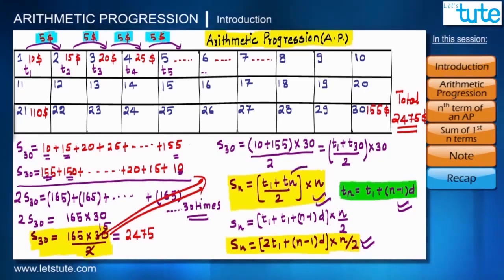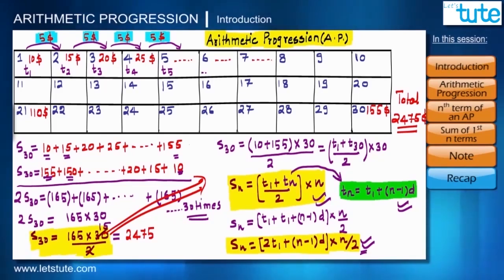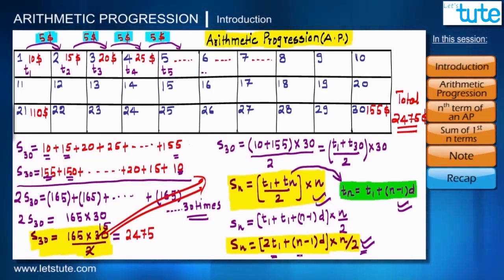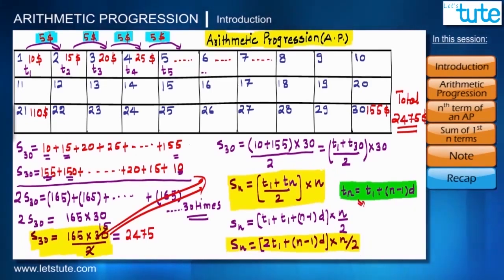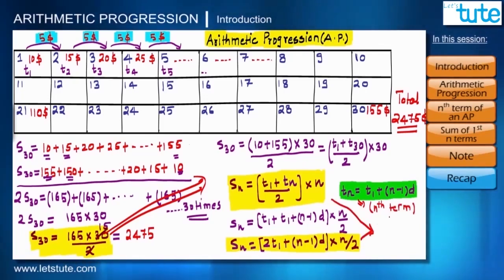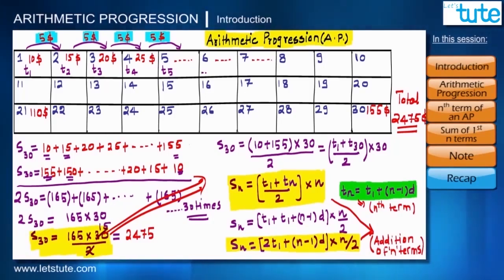If you use the first summation formula, you first need to find the value of tn, then proceed. In the second formula, you can directly use t1, n, and d. Use tn = t1 + (n−1)×d to find the nth term of an arithmetic progression, and use either summation formula to calculate the sum of n terms. Let's have a recap of this session.